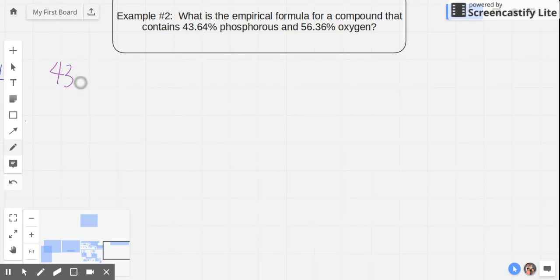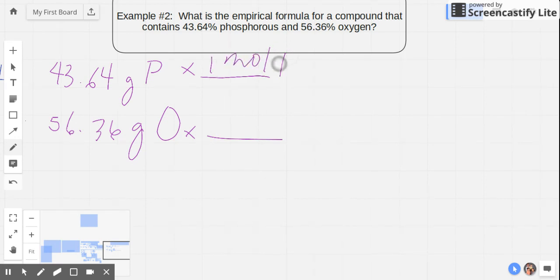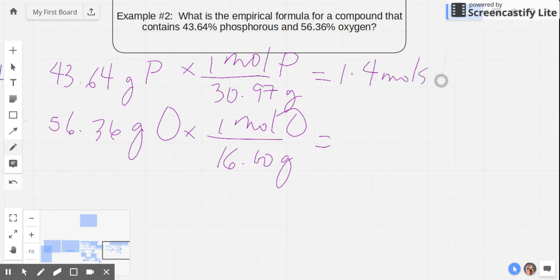Let's start with 43.64 grams of phosphorus and also 56.36 grams of oxygen. The second step is we need to divide these elements by their molar mass in the periodic table. For phosphorus, for every one mole of P, the mass is 30.97 grams. For oxygen, one mole of oxygen has a mass of 16.0 grams. When we divide this, we will generate the answers of 1.4 moles of phosphorus and 3.5 moles of oxygen.